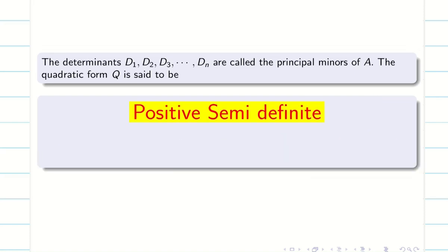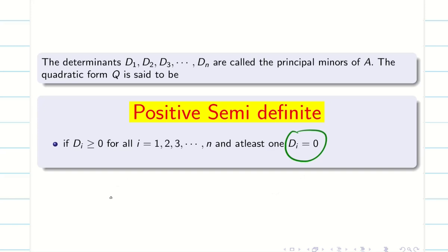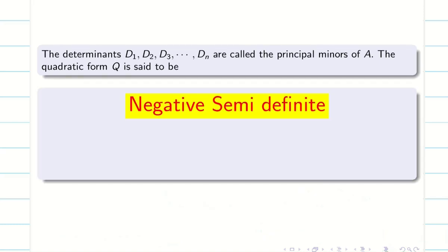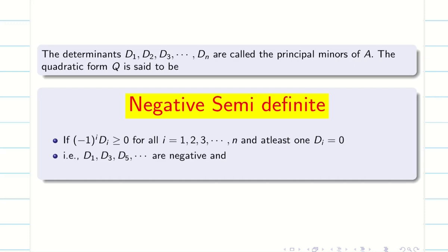For positive semi-definite: all Di should be greater than or equal to 0, with at least one Di equal to 0, where i varies from 1 to n. For negative semi-definite: all odd-indexed values should be negative and all even-indexed values should be positive, with at least one Di equal to 0.